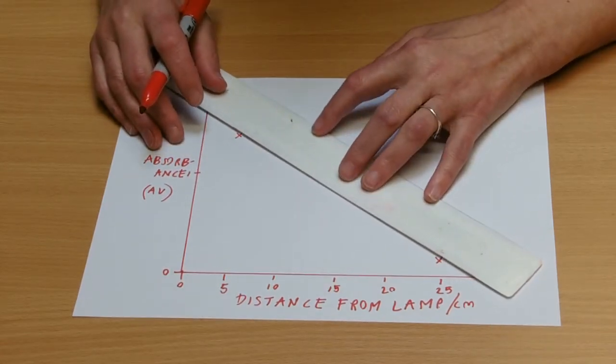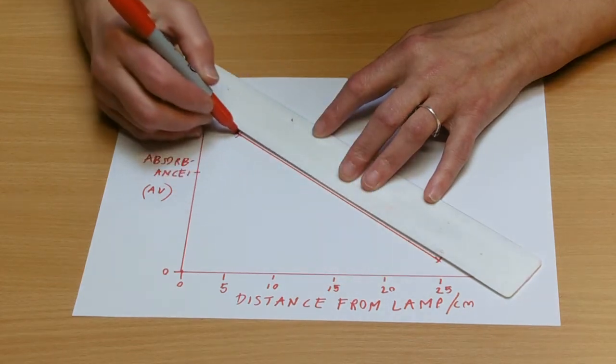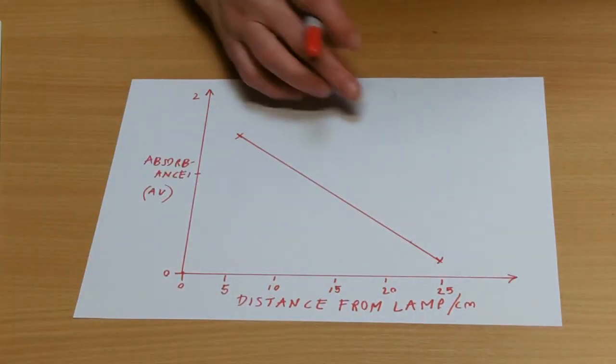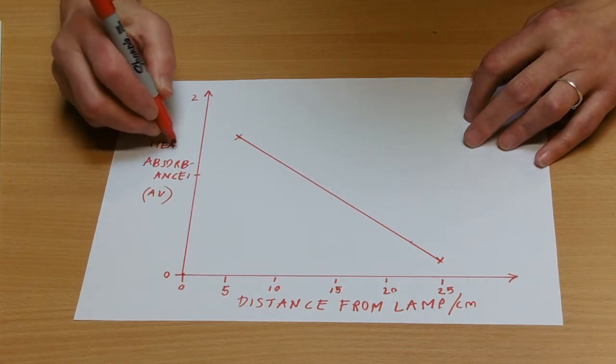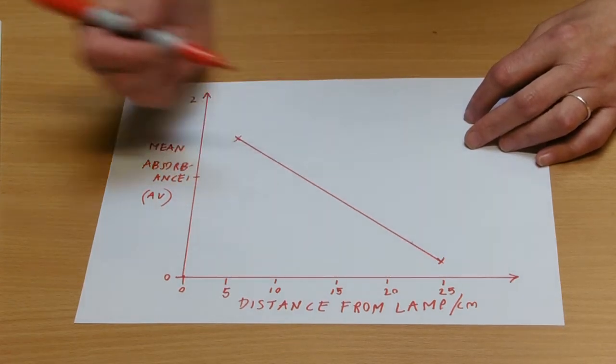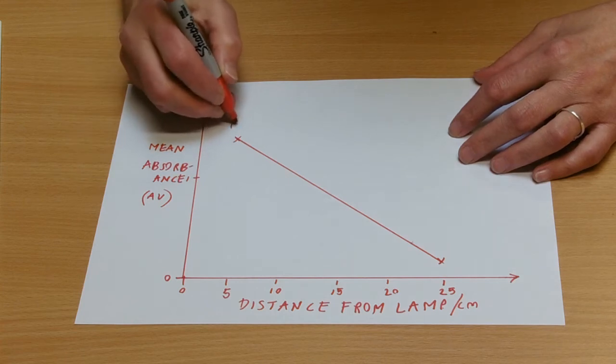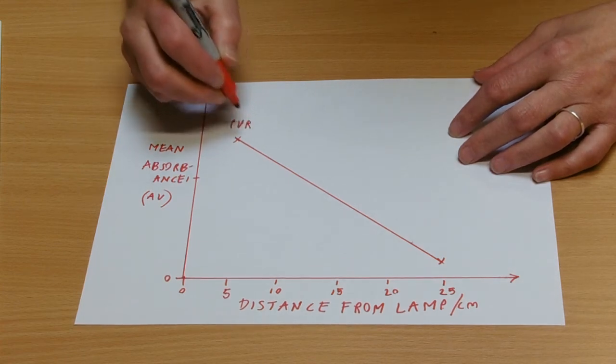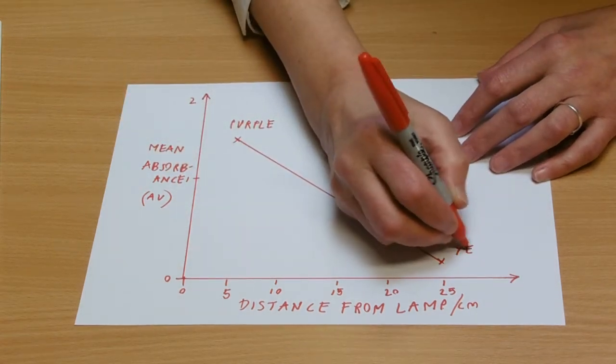Now, obviously, for reliability purposes, you would be doing this three times, and therefore this would be a mean absorbance that you were plotting, but your graph's going to go down. So, at this side, this is where your solution is purple, and this is where your solution is yellow.